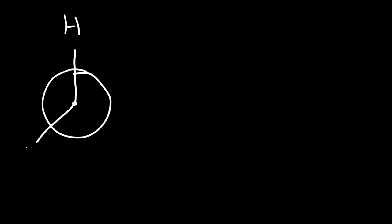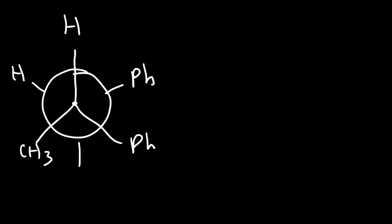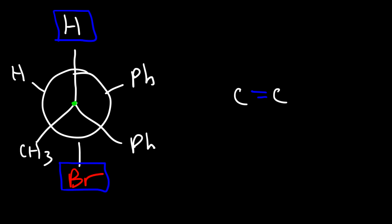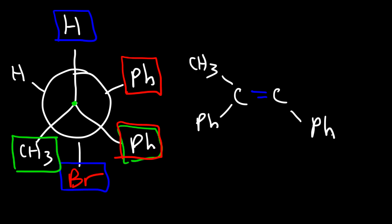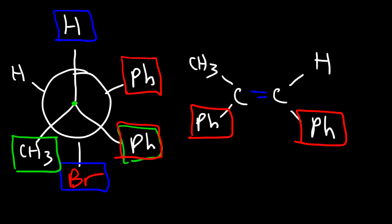Let's look at one more example. We eliminate the hydrogen and the bromine. Attached to the first carbon we have a methyl group and a phenyl group. Notice that this phenyl group is on the right side, and the other one is also on the right side — so they're cis with respect to each other. If this phenyl group is on the bottom, the other one has to be on the bottom on the other side, which means the hydrogen has to be on the other side. Therefore, the highest priority groups are on the same side, which means we have the Z isomer.